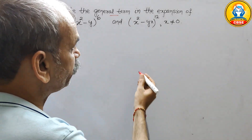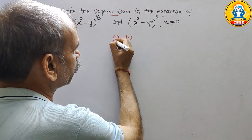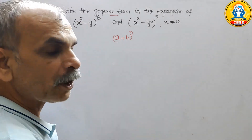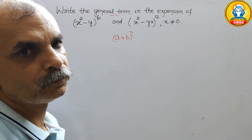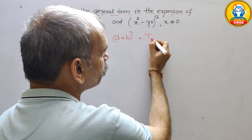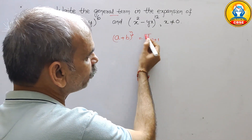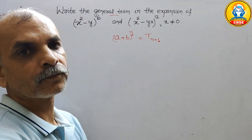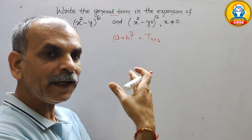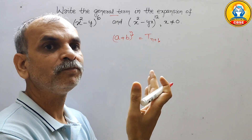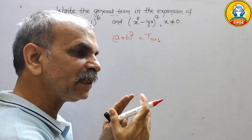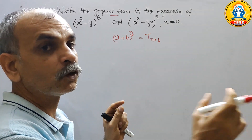We know that if we write (a + b) to the power of n, this is your binomial. The number of terms is n plus 1. Here n is given but we write n plus 1. When we expand this, we write a to the power of n and b to the power of 0, and at the last term we write a to the power of 0 and b to the power of n. So our series starts from 0 to n, not from 1 to n.